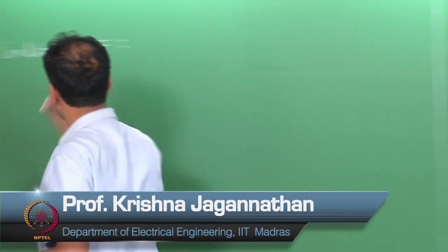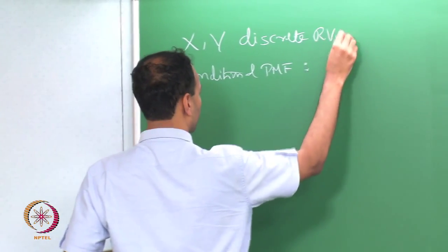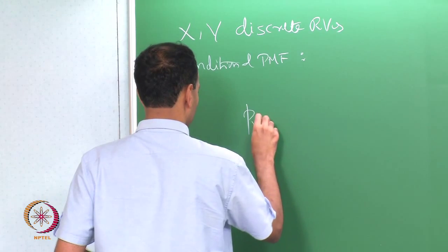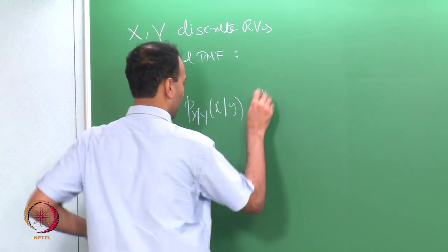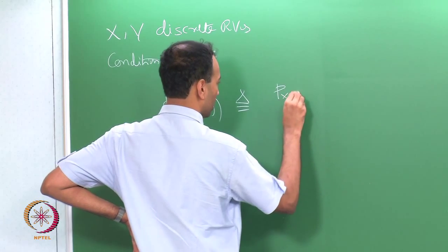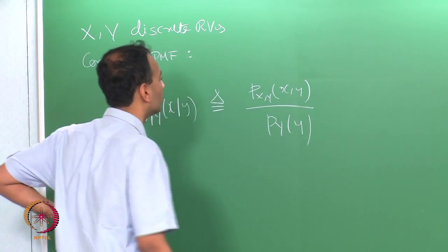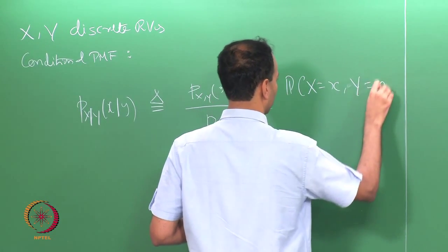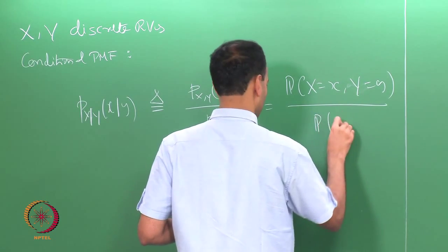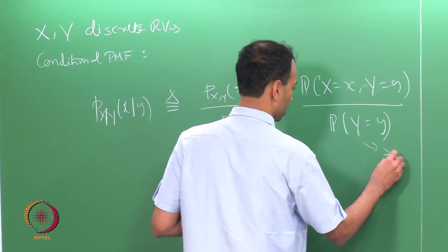Welcome back. We were discussing conditional PMF. If x and y are discrete random variables, the conditional PMF p_{X|Y}(x|y) is defined as p_{X,Y}(x,y) over p_Y(y). This is just the probability that X equals x and Y equals y, over the probability that Y equals y, assuming that p_Y(y) is positive.